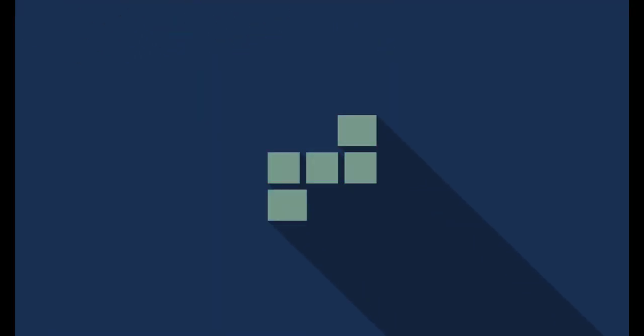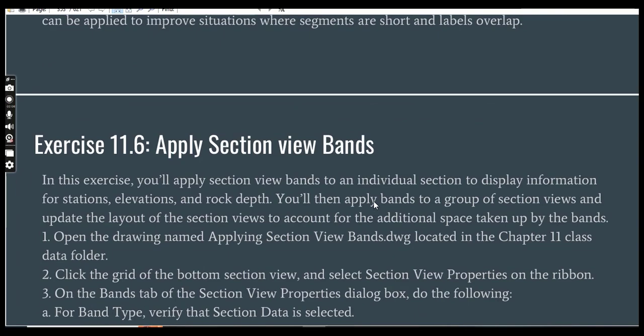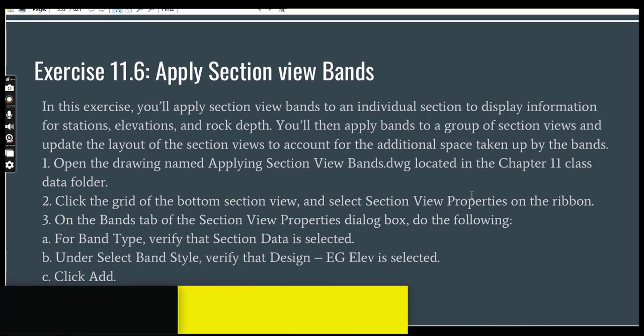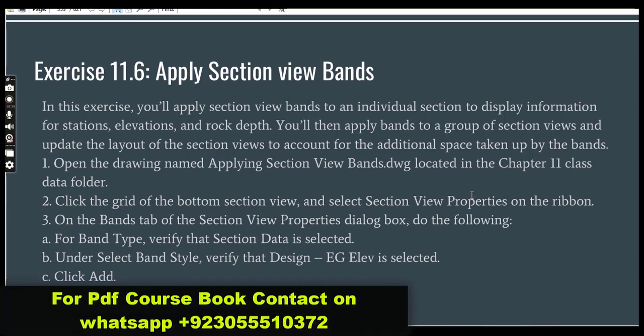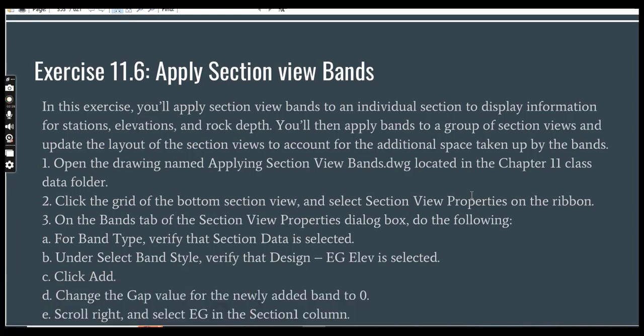As you can see in the section, the section data band setting can be applied to improve situations where segments are short and labels overlap. In exercise number 6, how to apply section view bands, we will apply section view bands to an individual section to display information for stations, elevations, and rock depth. We will then apply bands to a group of section views.